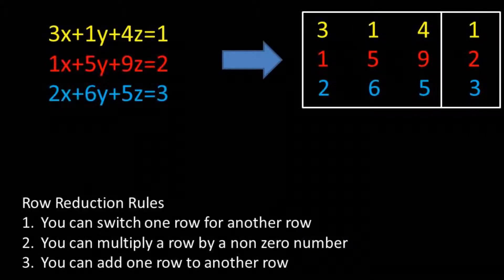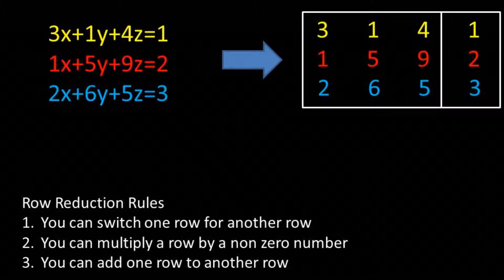Now we are ready to start the row reduction. There are three different ways you can manipulate the rows to reduce them. 1. You can switch the rows or reorder the rows. 2. You can multiply a row by a non-zero number. 3. You can add one row to another row.